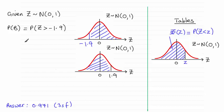So I can just say that this is going to be equal to the probability of Z being less than 1.9.